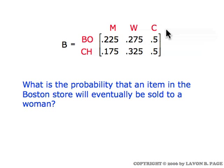Let's interpret the data. If an item is in the Boston store, then in the long run there's a 22.5% chance it'll be sold to a man, a 27.5% chance it'll be sold to a woman, and a 50% chance it'll be sold to a child. And here are the corresponding probabilities for an item in the Chicago store.